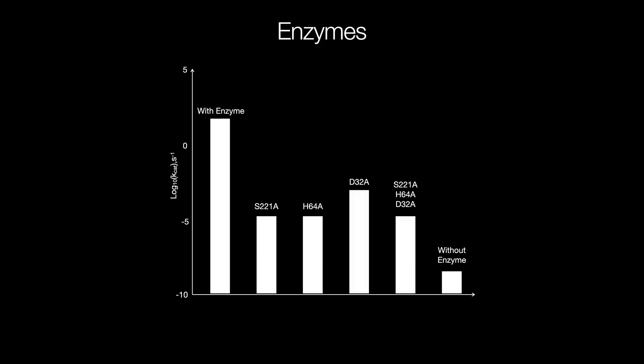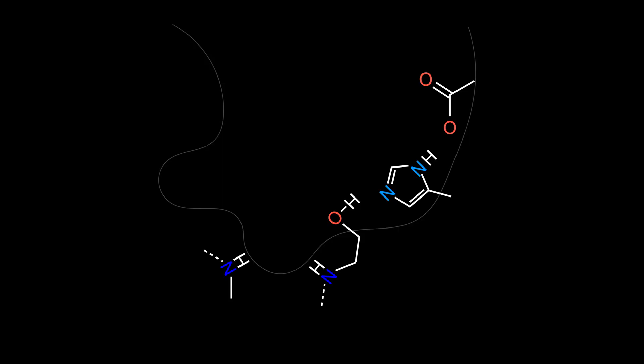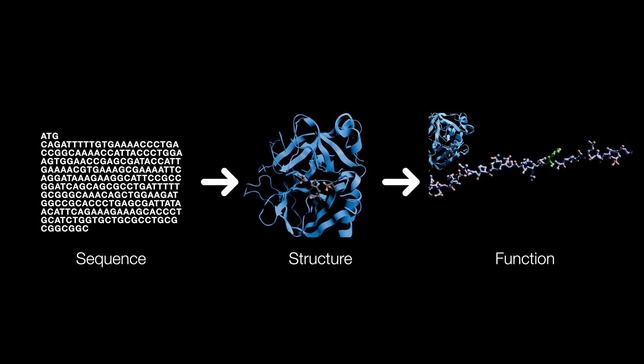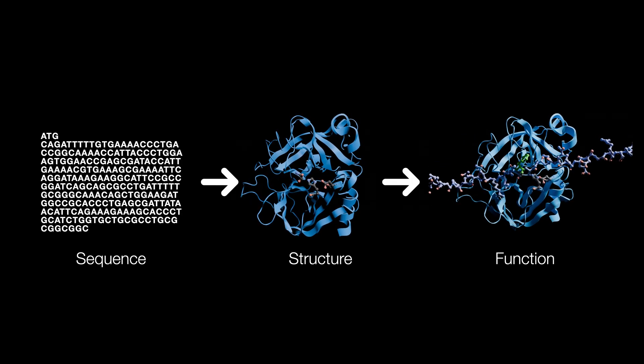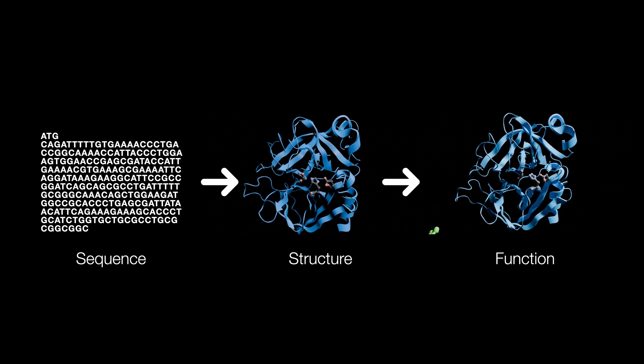One other cool thing of note is that the enzyme without the catalytic triad is still a thousand times faster than if it wasn't there at all. This is because the structure of the enzyme also ensures that the target chemicals are positioned properly, allowing the reaction to happen, not just proper recognition. All of this is another demonstration of why structure is the bedrock of function.